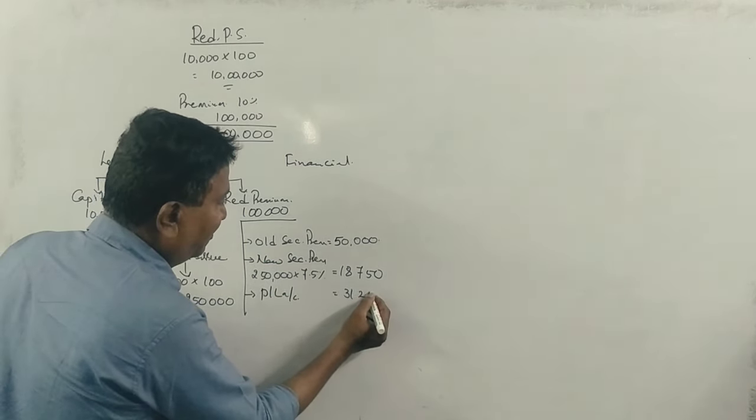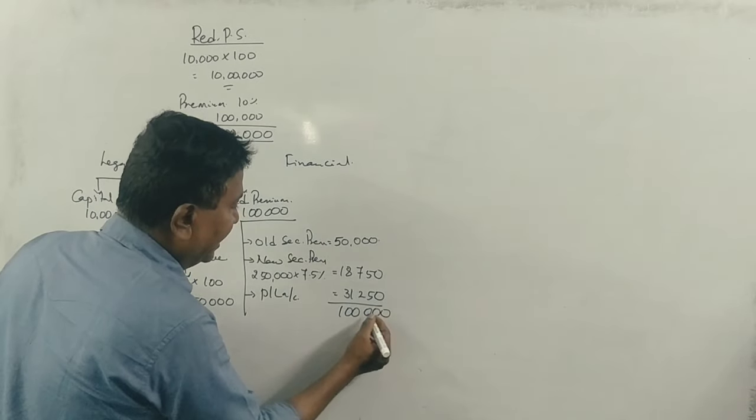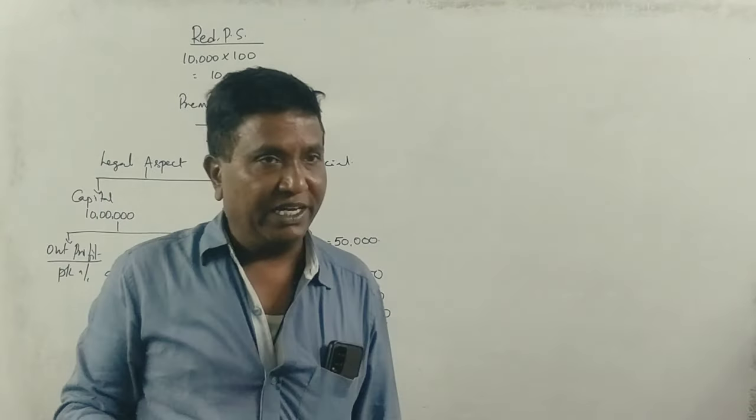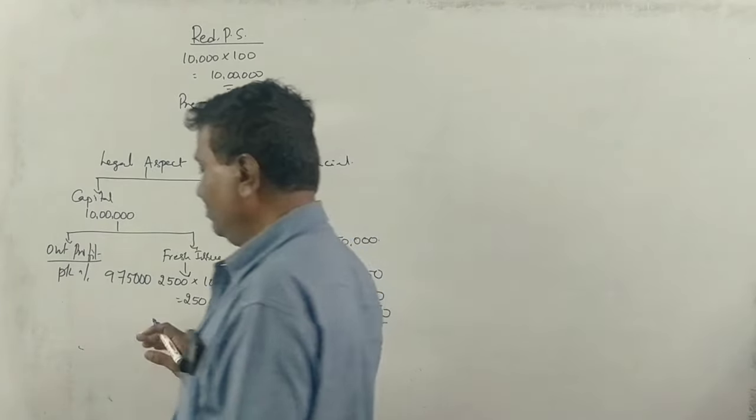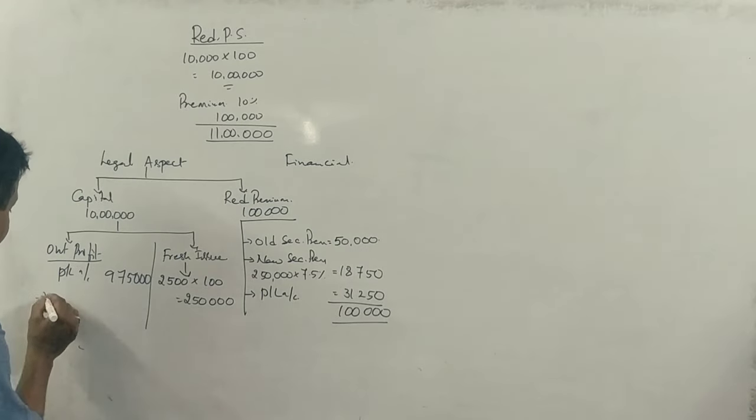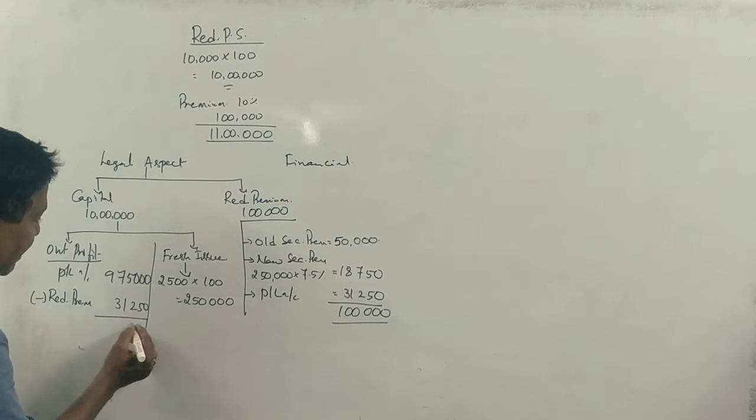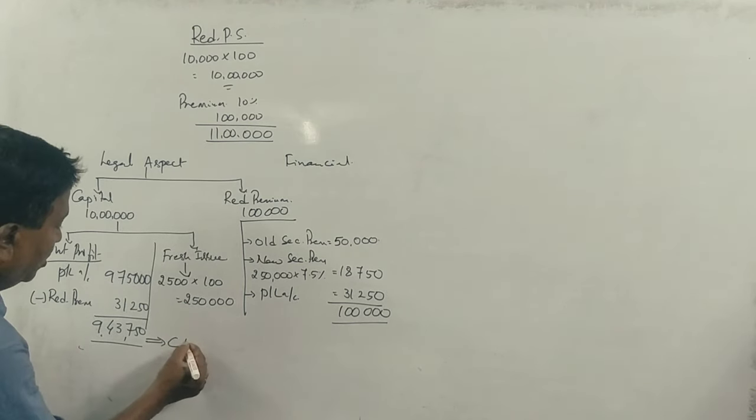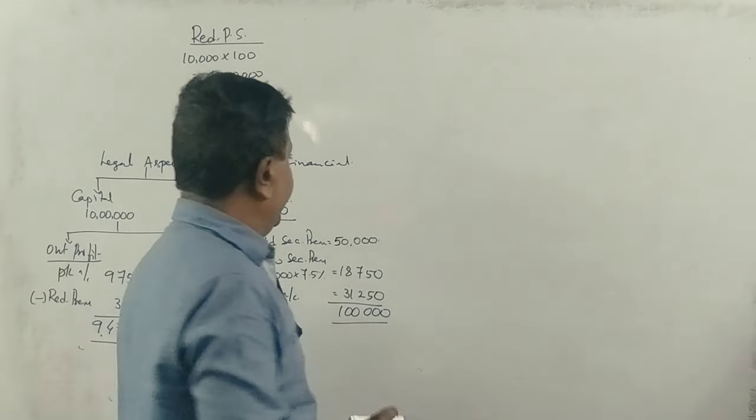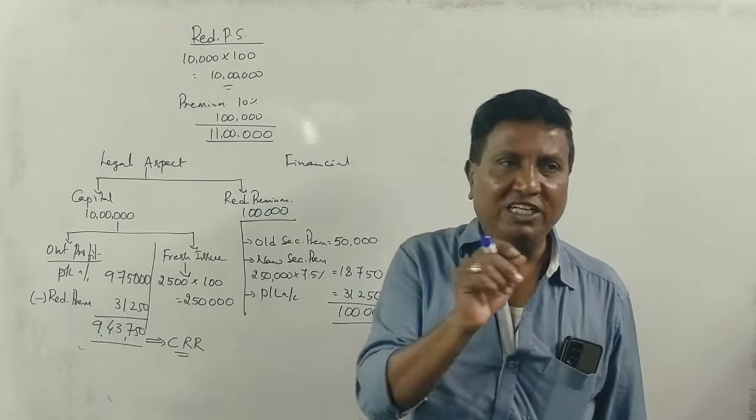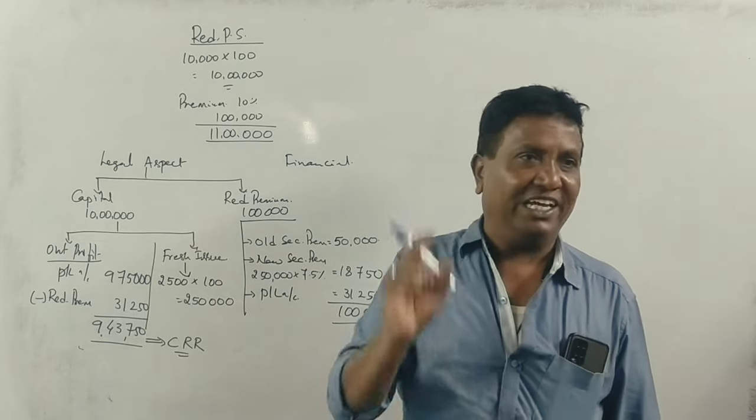Is the 31,250 to be taken from profit and loss? Yes. 68,750 from security premium, 31,250 from profit and loss, making 1 lakh for redemption premium. Correct? That's right. We can transfer to CRR from the total P&L account of 9,75,000 lakhs. After using 31,250 for redemption premium, the balance is 9,43,750. This amount should be transferred to CRR. Capital Redemption Reserve. Correct?